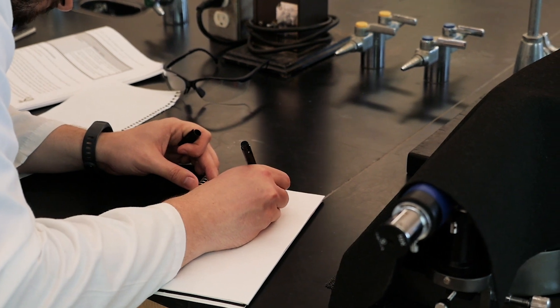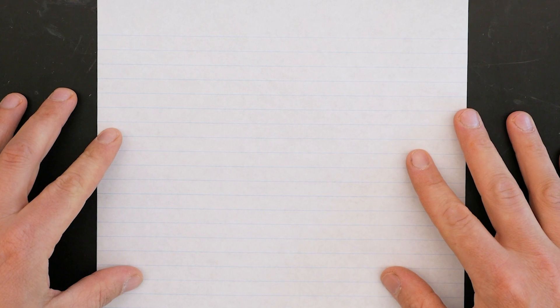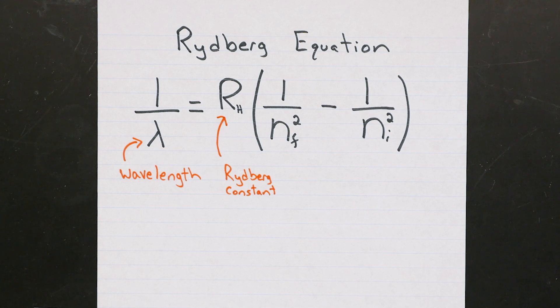Now we know from class that these spectral lines observed for the hydrogen atom correspond to electronic transitions that obey the Rydberg equation, where r is the Rydberg constant and n corresponds to a particular energy state. You can actually validate the Rydberg equation here by comparing your observed results with the theoretical wavelengths that you'd predict for each spectral line using the Rydberg equation.